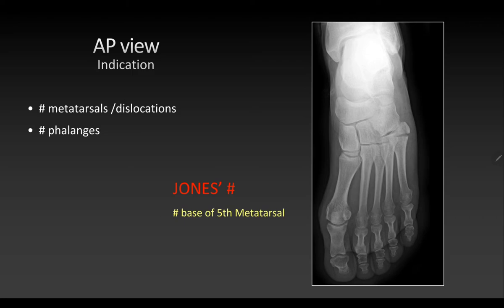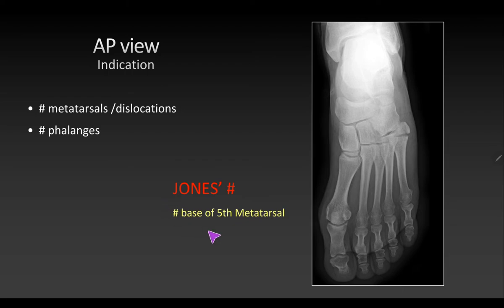The AP view is indicated in cases of fractures of metatarsals or phalanges. One named fracture is the Jones fracture — a fracture at the base of the fifth metatarsal. On x-ray, the other metatarsals appear normal, but at the fifth metatarsal a translucency is visible at the base, indicating the fracture.